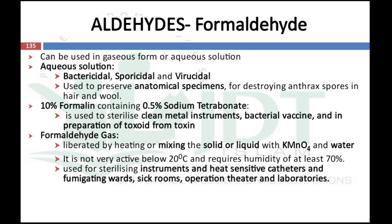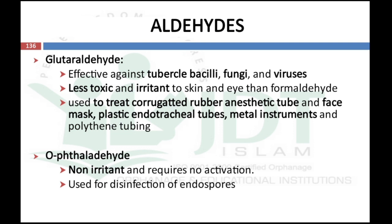Glutaraldehyde is effective against tubercle bacillus, fungi, and viruses. It is less toxic and less irritant to skin and eyes compared with formaldehyde, and is mainly used to treat corrugated rubber anesthetic tubes, face masks, plastic endotracheal tubes, metal instruments, and polythene tubing. Orthophthalaldehyde is non-irritant, requires no activation process for its bactericidal effects, and is mainly used for disinfection of endoscopes.